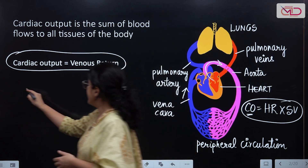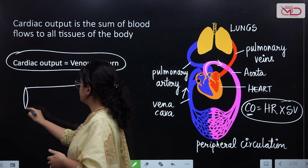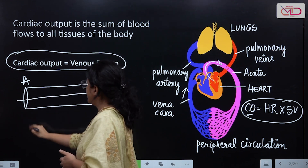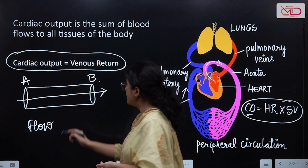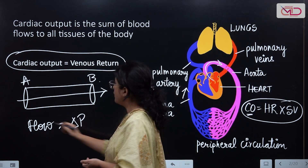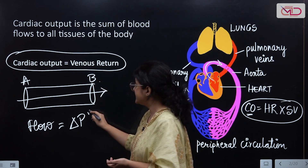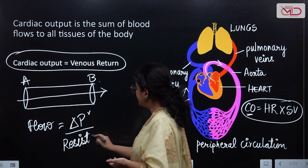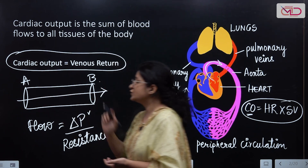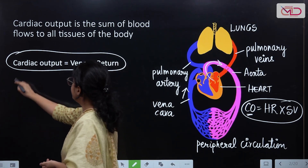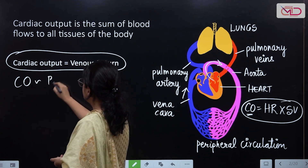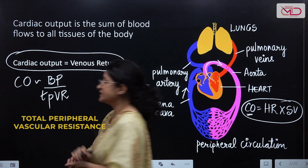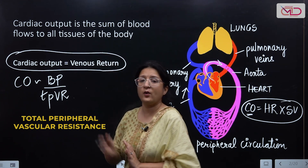Applying basic laws of physics, if we have blood flowing from point A to point B, the amount of blood flow depends on the pressure difference between point A and point B — the blood pressure — and will also be dependent on the resistance offered to the flow of blood across those two points. So cardiac output is related to blood pressure and total peripheral vascular resistance.